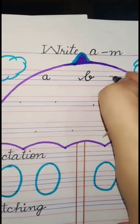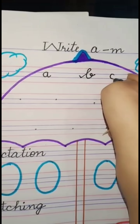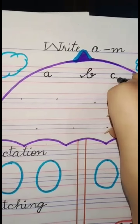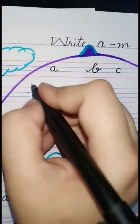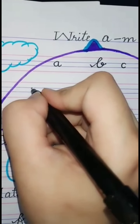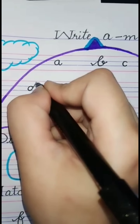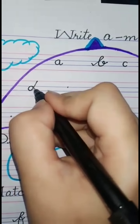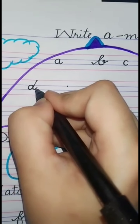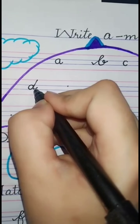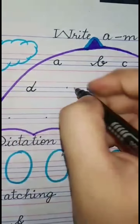Kha - Khet. We write kha on the two middle lines. Next is da. Firstly you make a kha, go up with a slant line, come down with a slant line, and then leg out. Da - Dog.